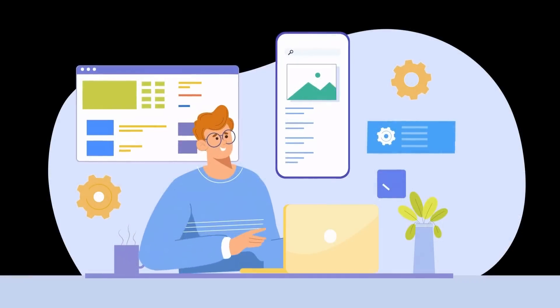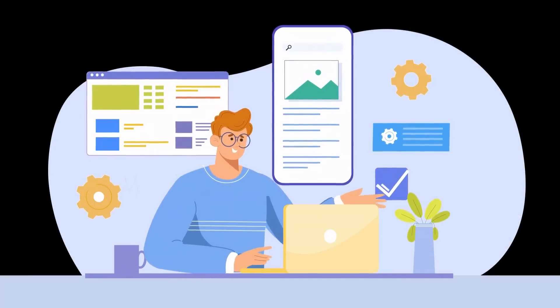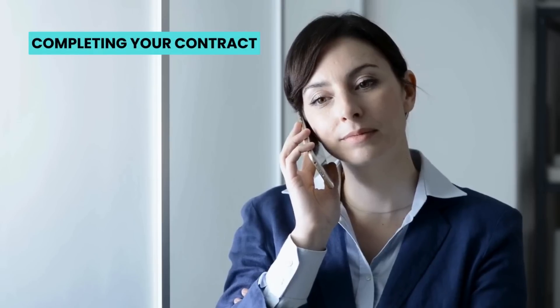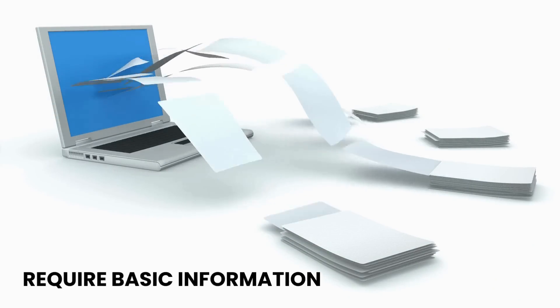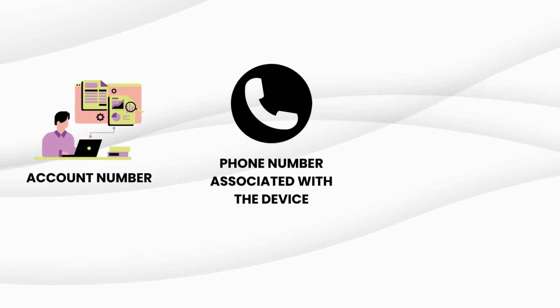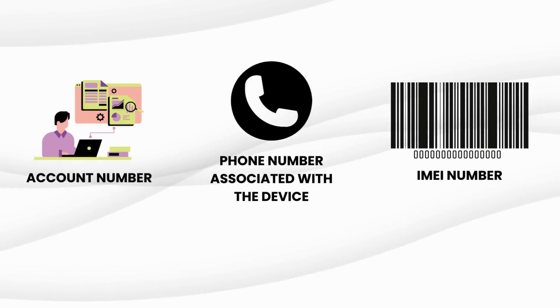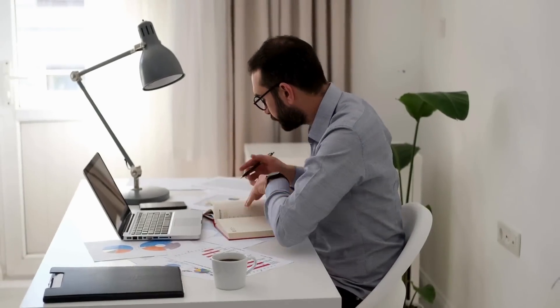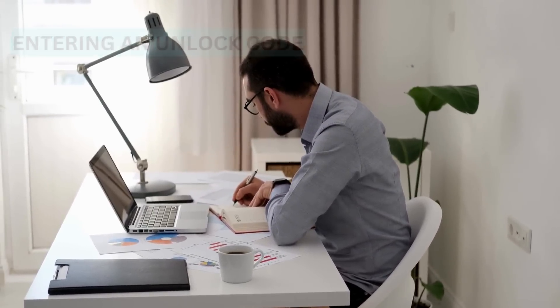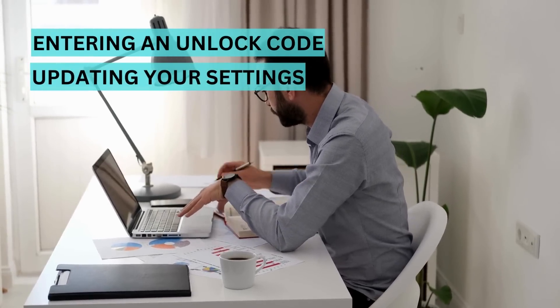Another way to remove a carrier lock from your phone is to contact your carrier directly. Many carriers offer unlock services if you meet certain criteria, such as completing your contract or paying off your device in full. This method is often the most straightforward and ensures that you're complying with all legal requirements. When you contact your carrier, they usually require basic information such as your account number, the phone number associated with the device, and the IMEI number. Once your request is approved, they will provide instructions to complete the unlocking process, which might involve entering an unlock code or updating your device's settings.